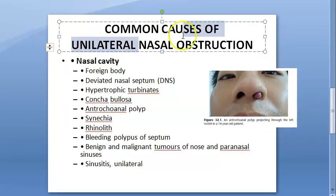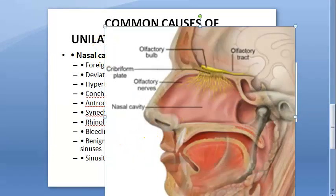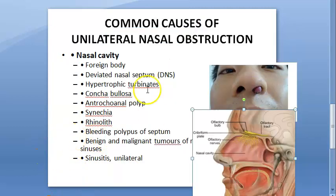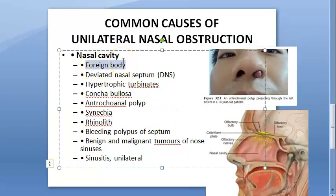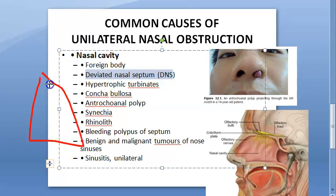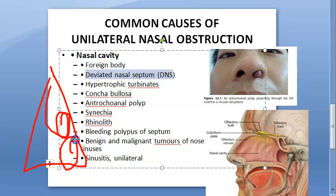Now moving to the nasal cavity. We want only unilateral causes here. Foreign body going and getting lodged is one cause. Deviated nasal septum - when the septum deviates to one side, there is definitely unilateral obstruction. Hypertrophic turbinates - the turbinates have overgrown on one side.